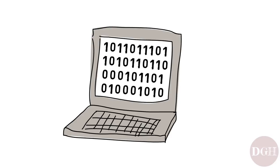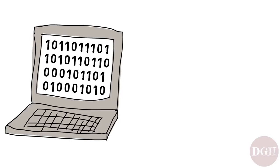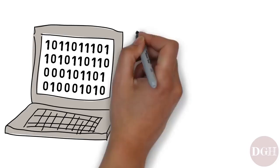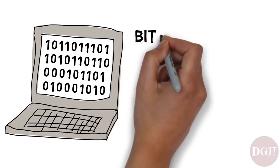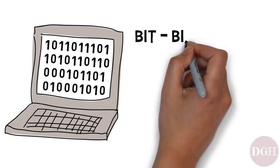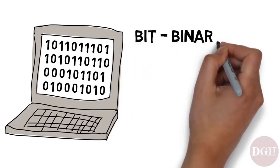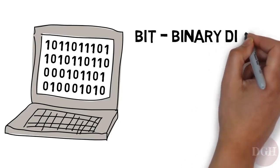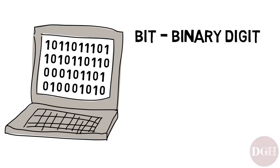The word used to describe these binary digits, which can be either 1 or 0, is a bit — B-I-T. It's short for binary digit, and it's the smallest unit of data in a computer.